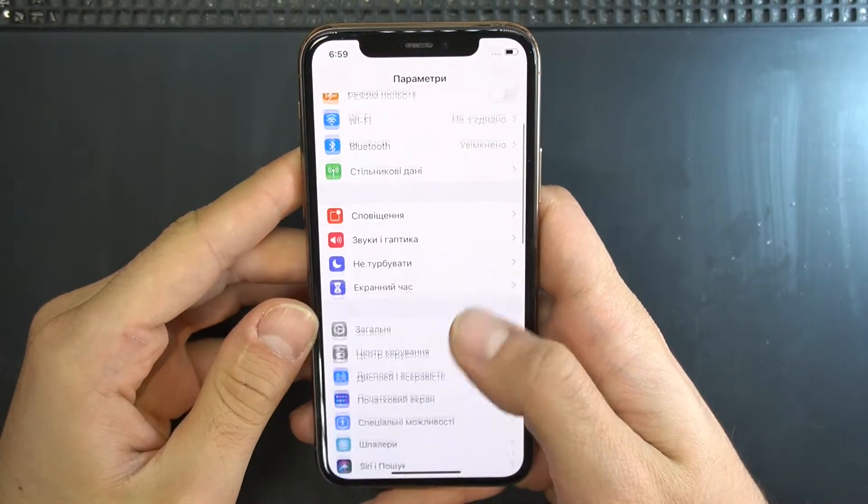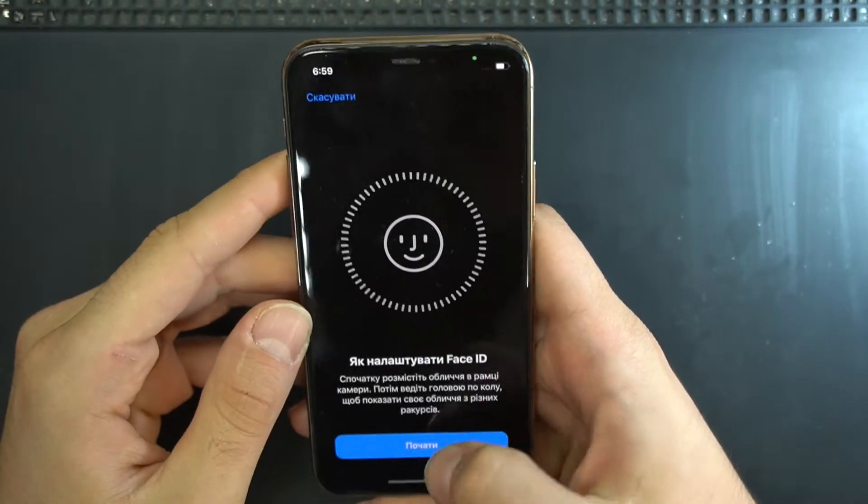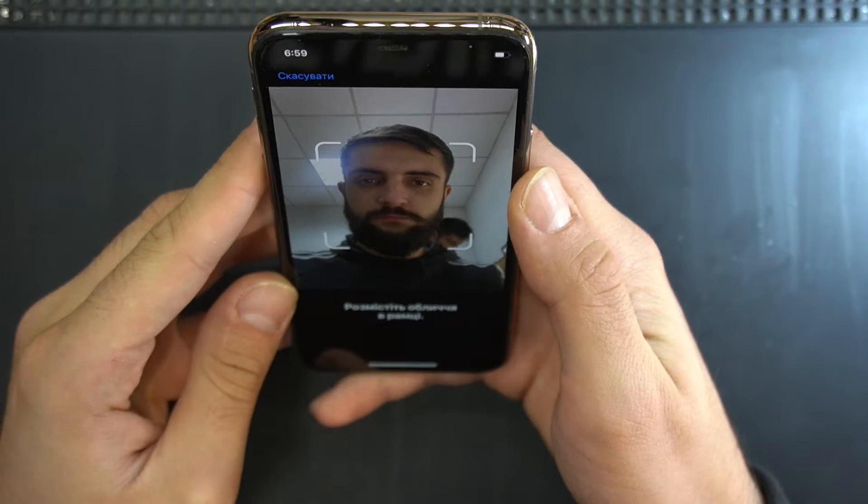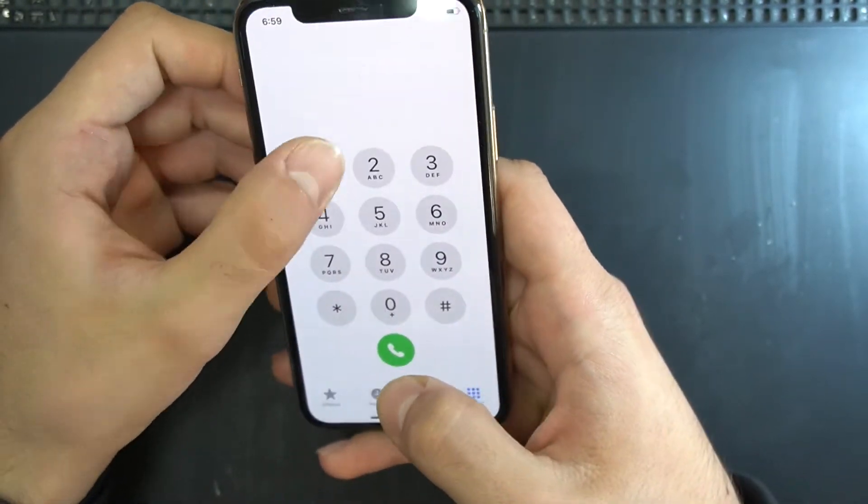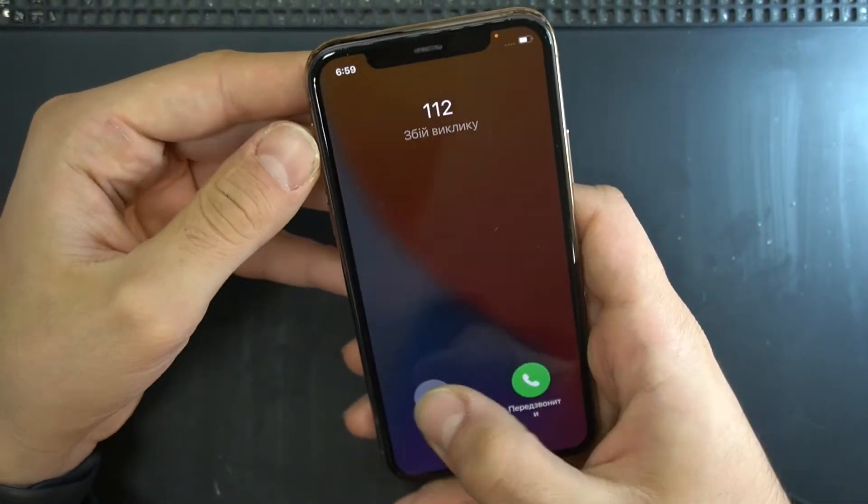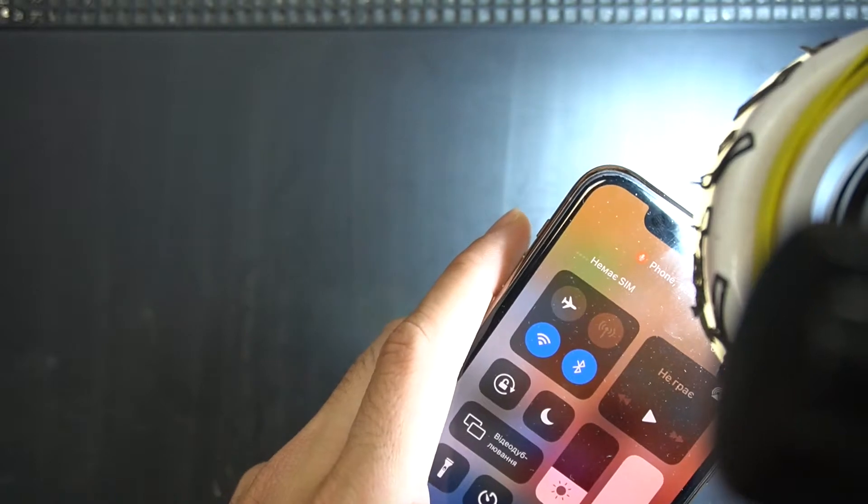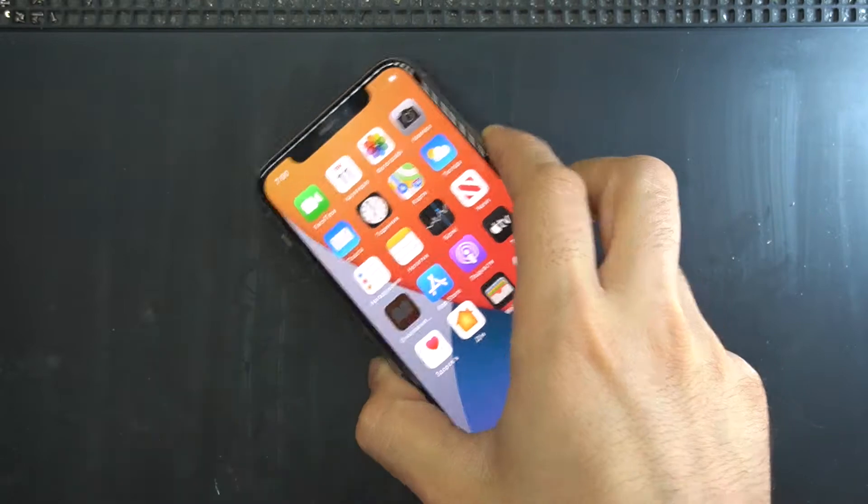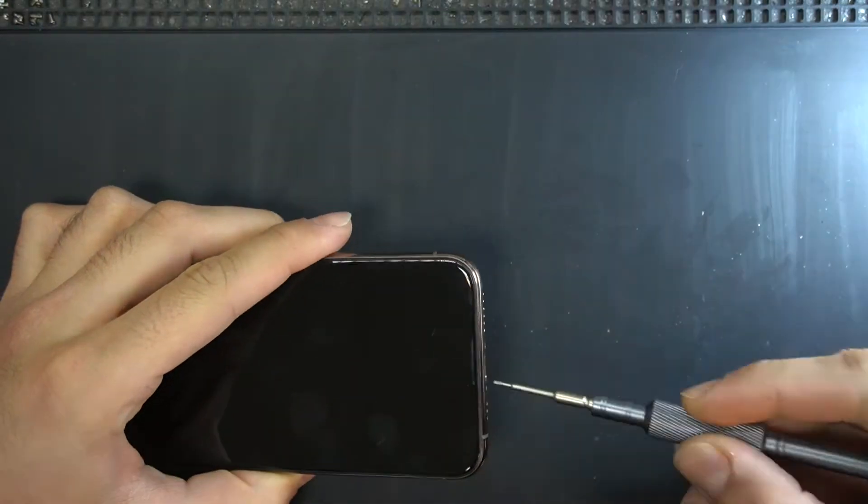Hello everyone, today we have an iPhone 11 Pro with the classic Face ID problem. In the new iOS it just says Face ID is not available right now. As you can see, the proximity sensor and ambient light sensor are working, so it's most likely the dot projector. Let's disassemble the phone and check the dot projector.